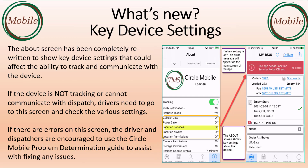The About screen has been completely rewritten to show key device settings that could affect the ability to track and communicate with the device. If the device is not tracking or cannot communicate with dispatch, drivers need to go to this screen and check the various settings. If there are errors on the screen, the driver and dispatchers are encouraged to use the Circle Mobile Problem Determination Guide to assist with fixing any issues.